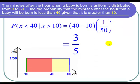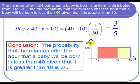And now I'm ready to state my conclusion. So I can conclude the probability that the minutes after the hour that a baby will be born is less than 40 given that it is greater than 10 is 3 fifths and I'm done with the problem.